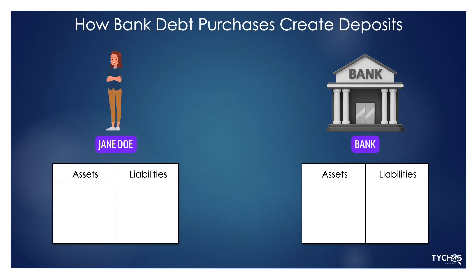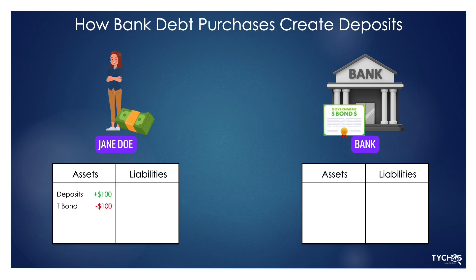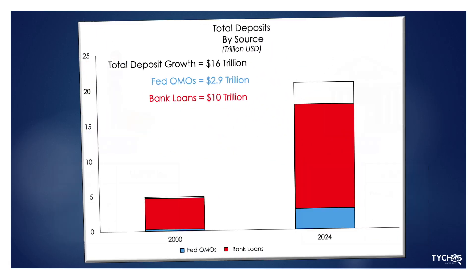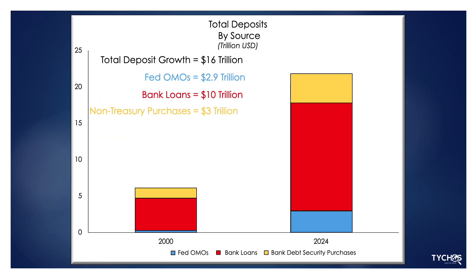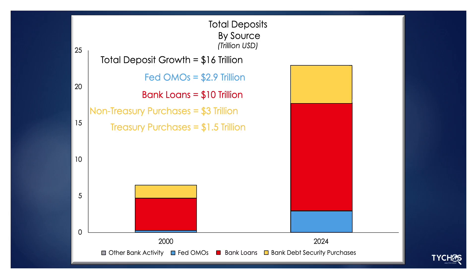Banks also create deposits when they purchase debt securities — treasuries, agency bonds, or municipal bonds — from households or other non-bank investors. That's the exact equivalent of the bank making a loan. To make that purchase, the bank credits the seller's account with a new deposit and records the securities as an asset. From 2000 to 2024, banks bought an additional $3 trillion of mortgage and corporate bonds, and bank purchases of treasuries from individuals created another $1.5 trillion, more than enough to account for the remainder, with some technical offsets reducing deposits.